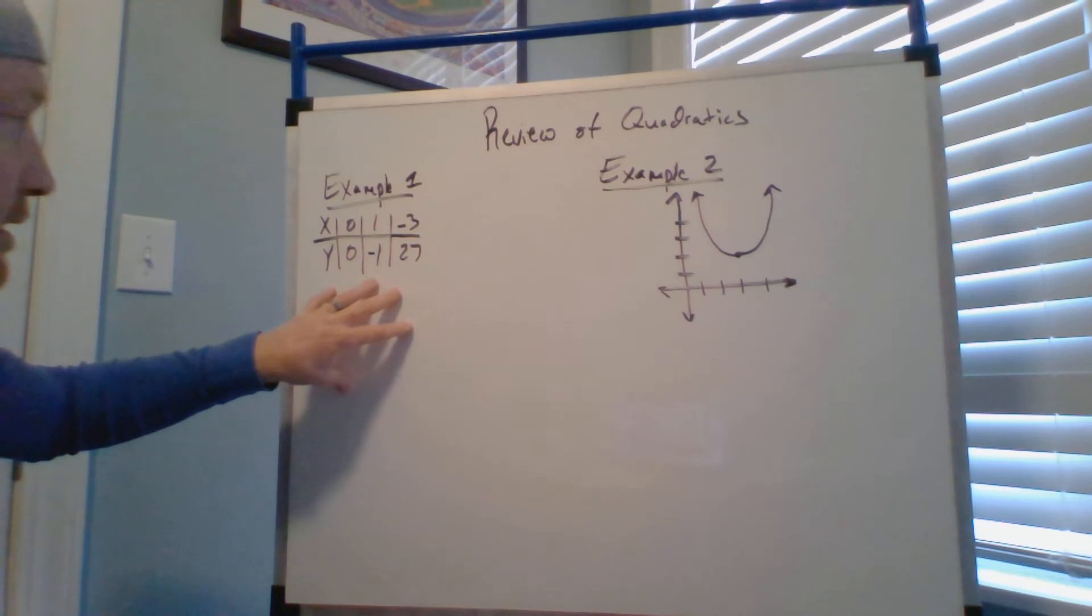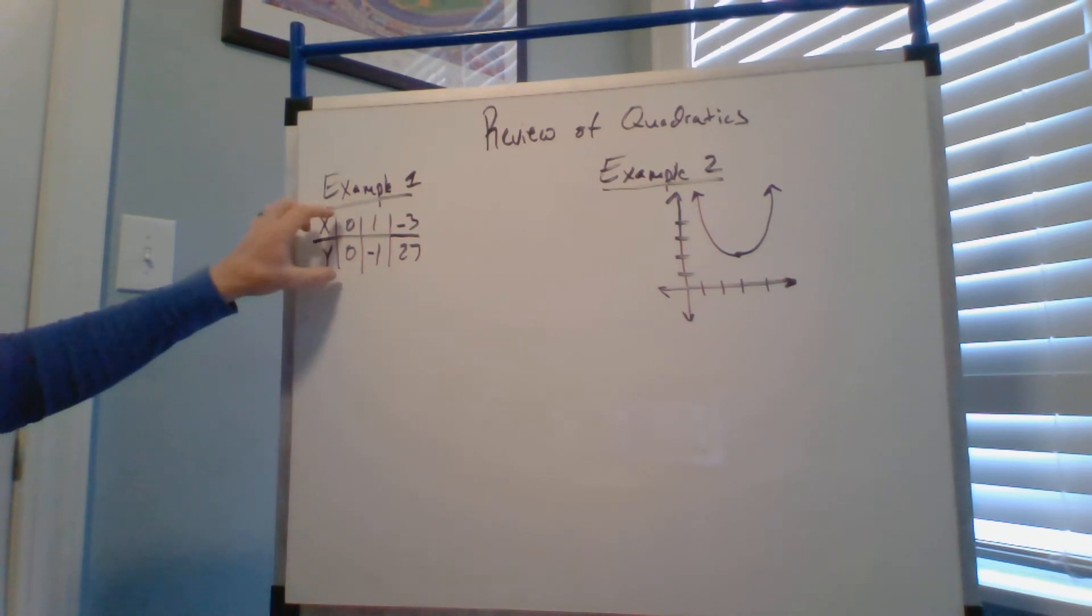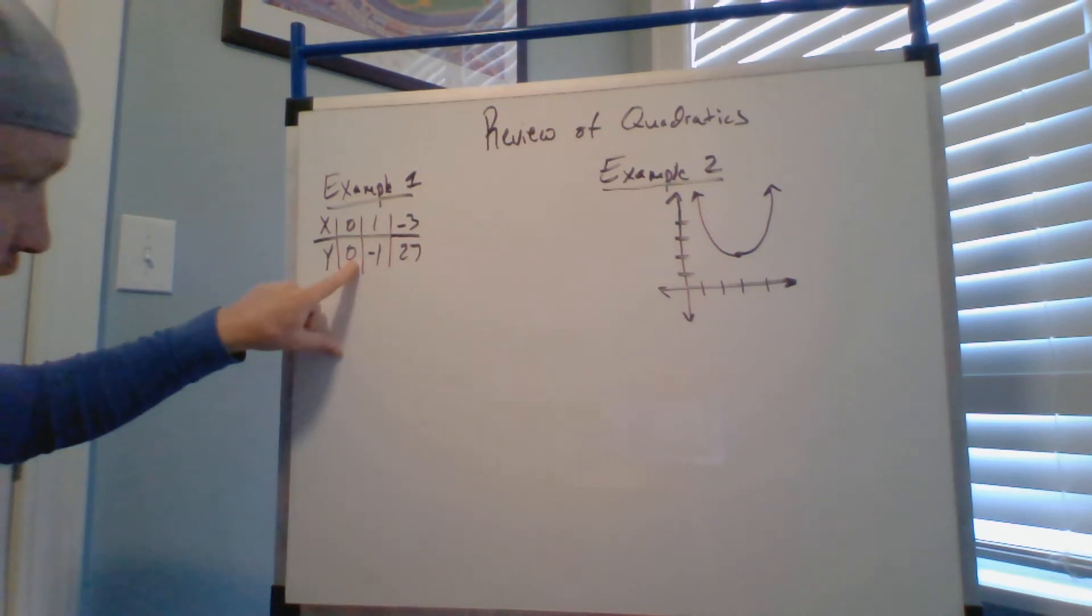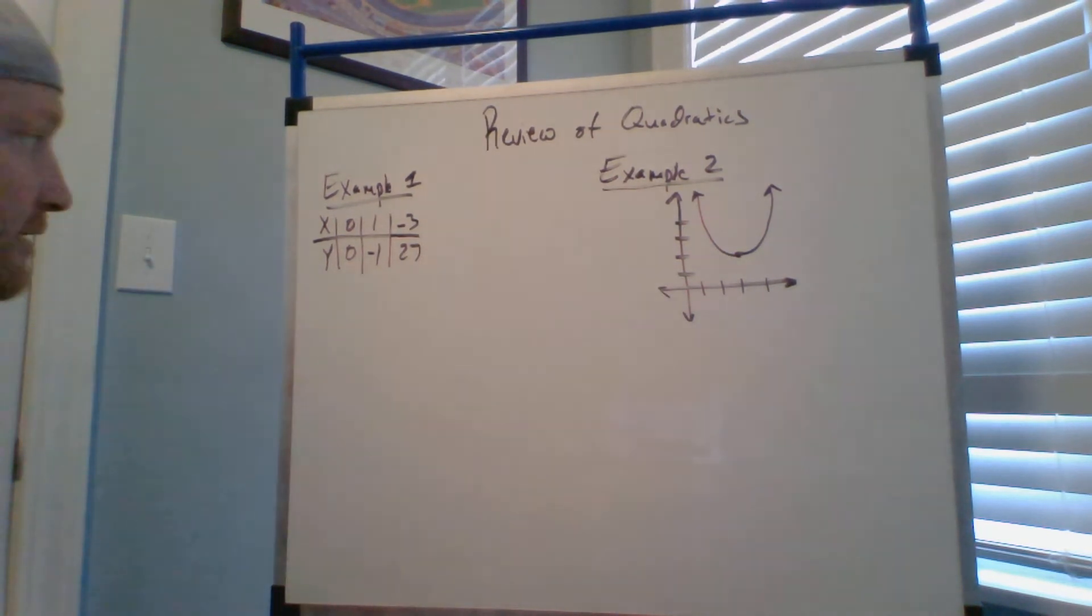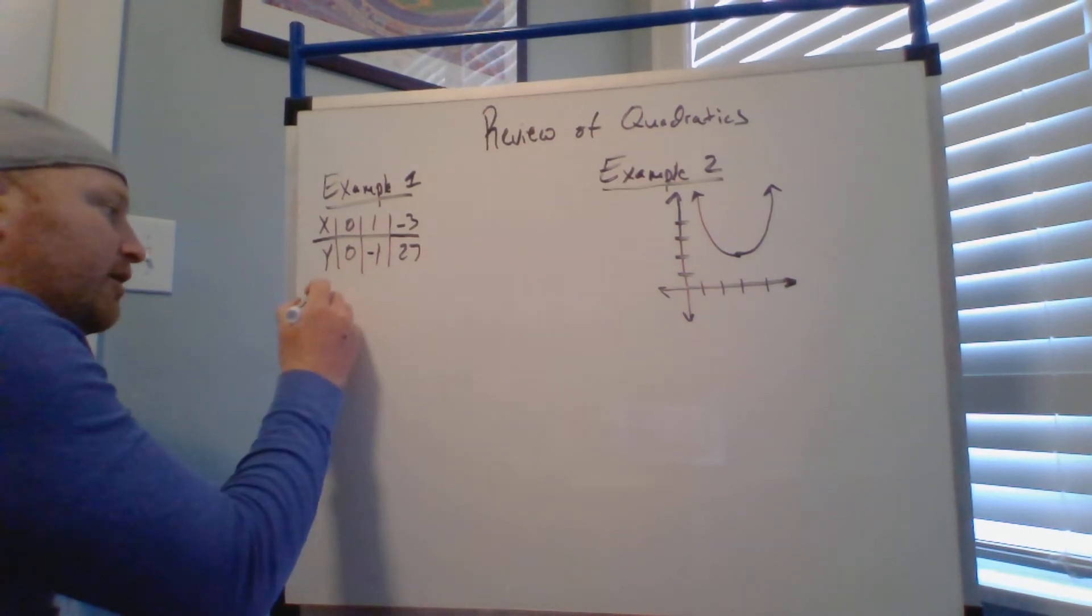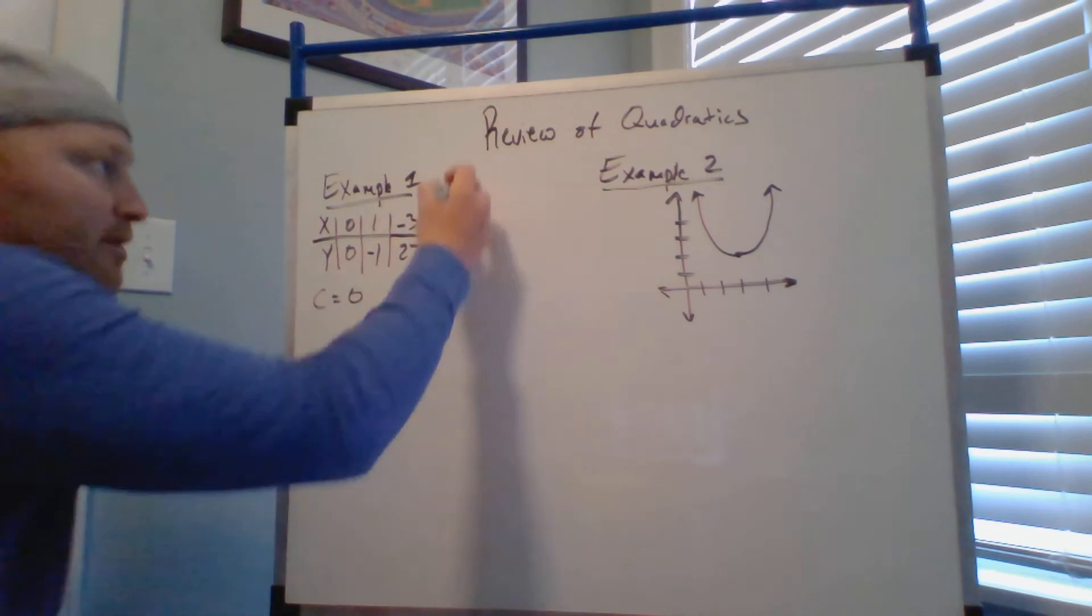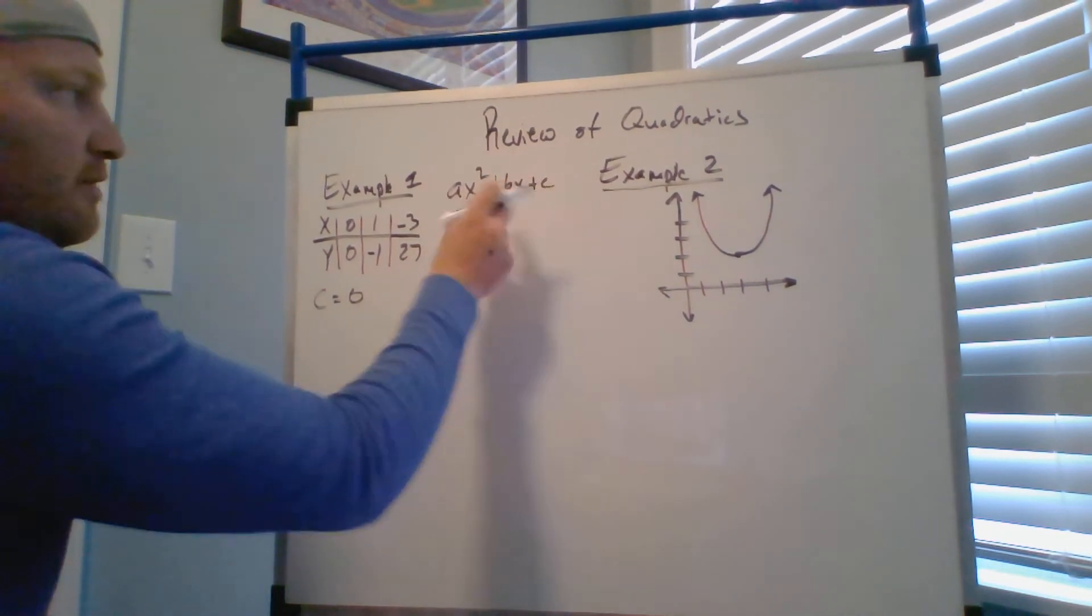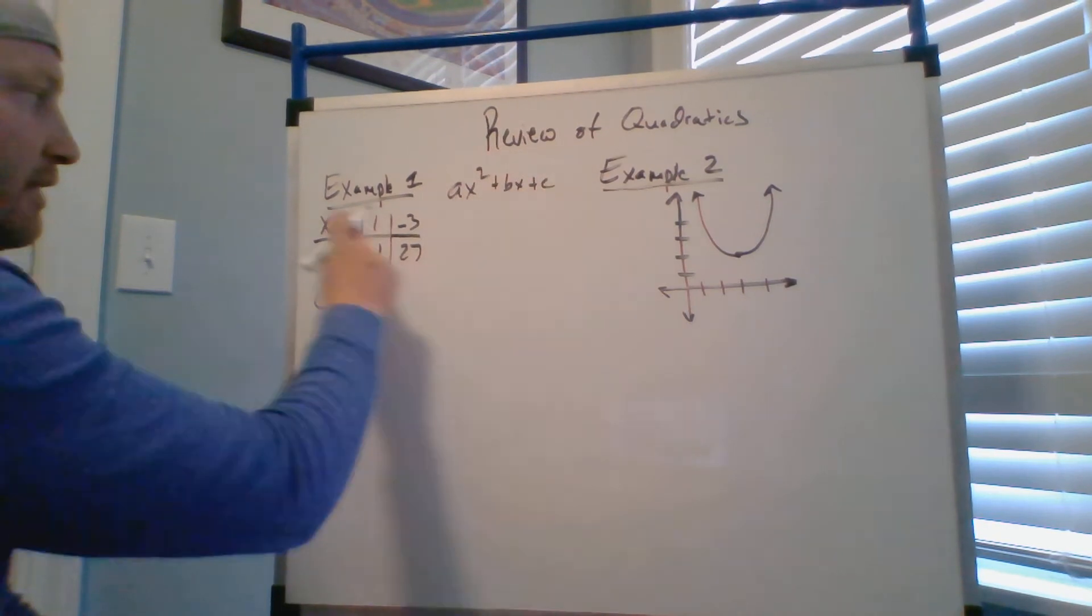So next week we're going to be working on some harder ones where your C or your y-intercept is not zero, and that's going to be a new lesson for next week. Right now, because we know our y-intercept is zero, we know our C is zero. Remember ax squared plus bx plus C, when x is zero, what is the y-intercept. That's how I know it so quickly.